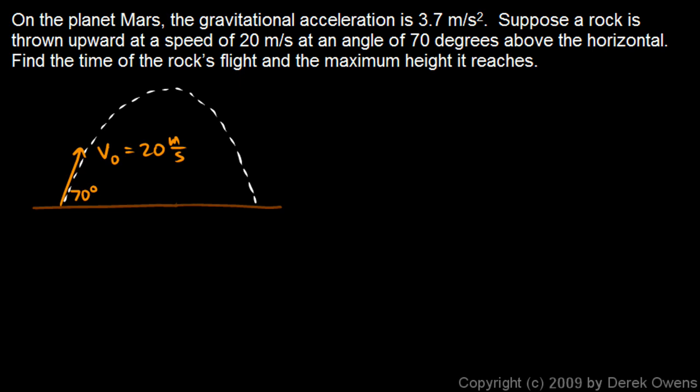Now, the key to a projectile problem is to do the horizontal and vertical motion independently. To do that, we have to break this vector up into its horizontal and vertical components. I'll draw these here. To the right is v0x and then up here is v0y, the horizontal and vertical components of the initial velocity.